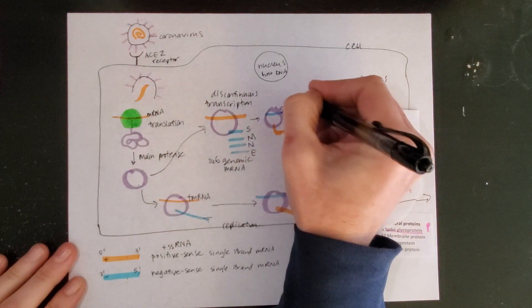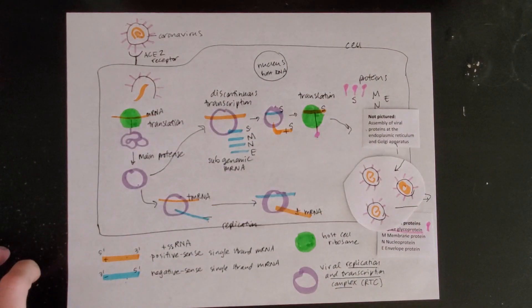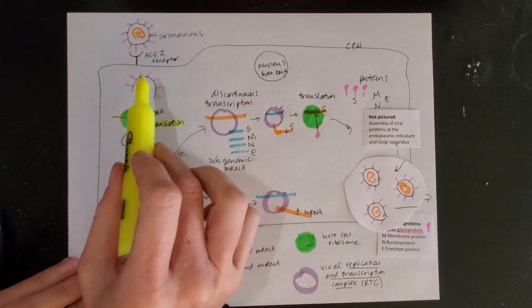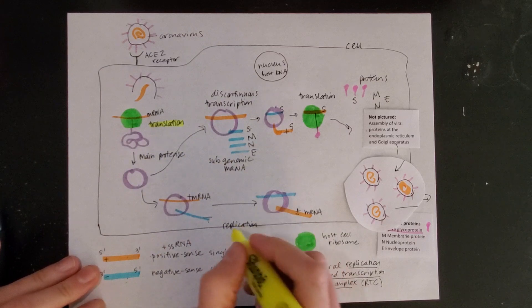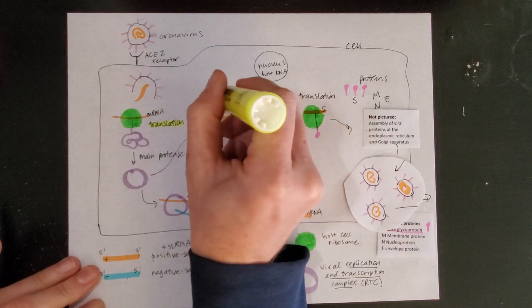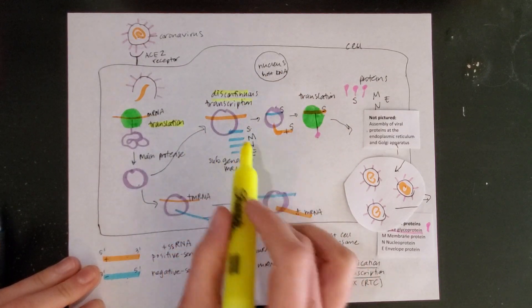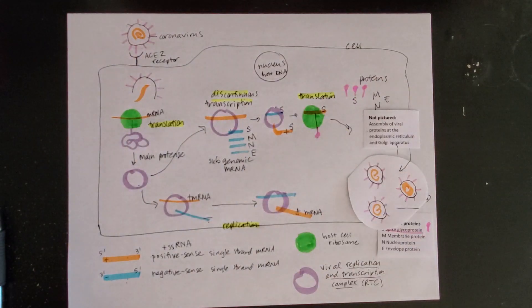First of all, one more label here. This is translation again. So we have a few labels throughout here. We had the translation initially of two-thirds of the genome. We later had replication of that mRNA. Here we had discontinuous transcription - we got fragments of mRNA out. And then here we have translation again. You're familiar with some of those terms from what we learned about nucleic acids.